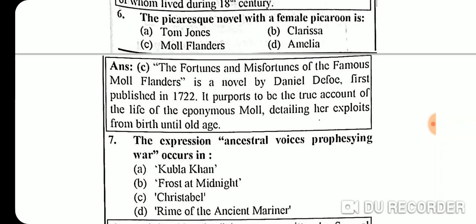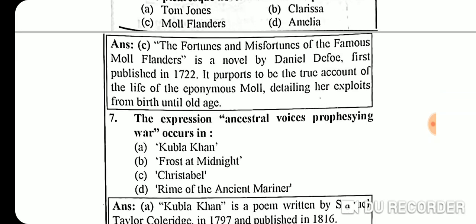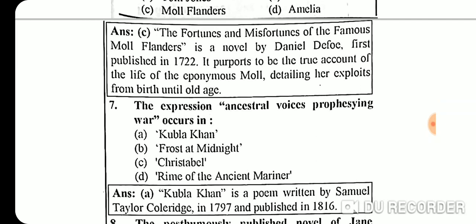Question 6: The picaresque novel with a female picaroon is Moll Flanders. The full title is 'The Fortunes and Misfortunes of the Famous Moll Flanders,' a novel by Daniel Defoe, first published in 1722. It purports to be the true account of the life of the eponymous Moll.